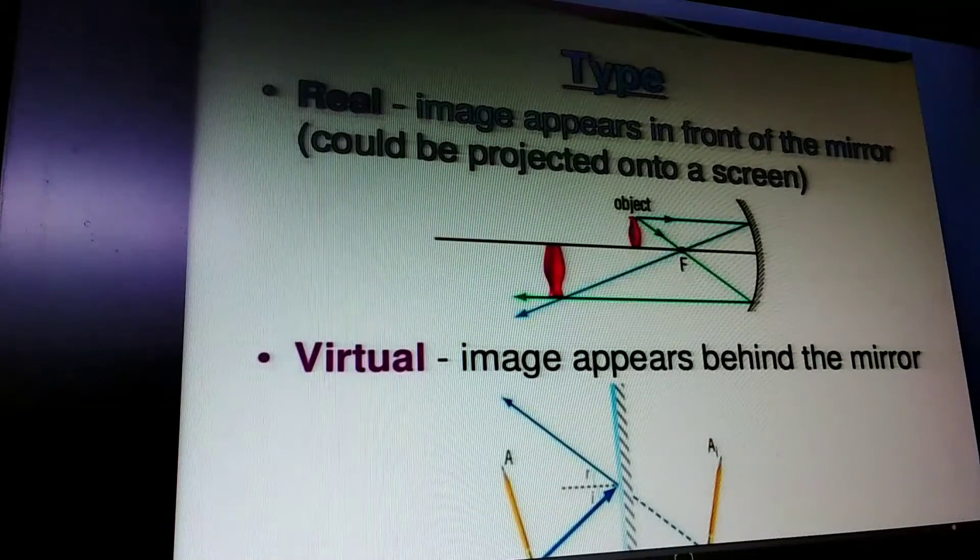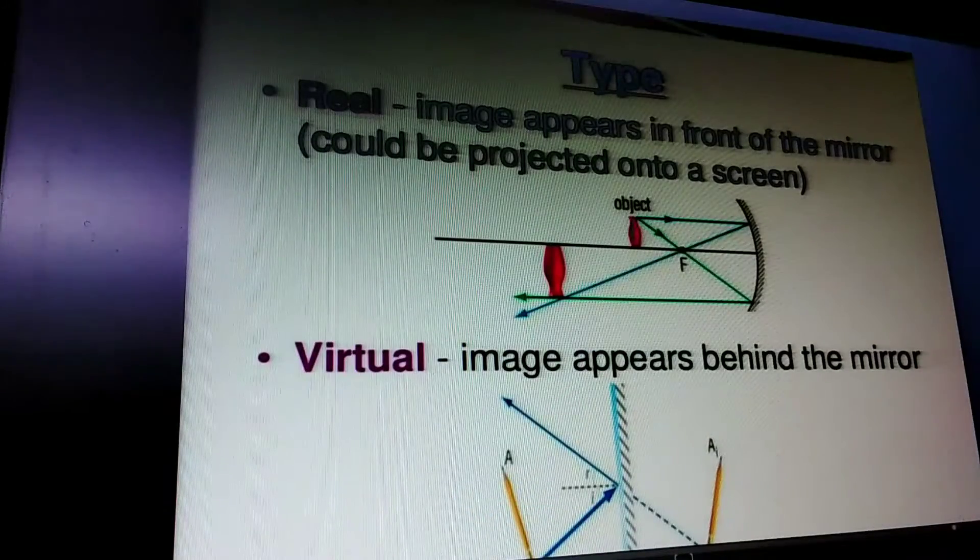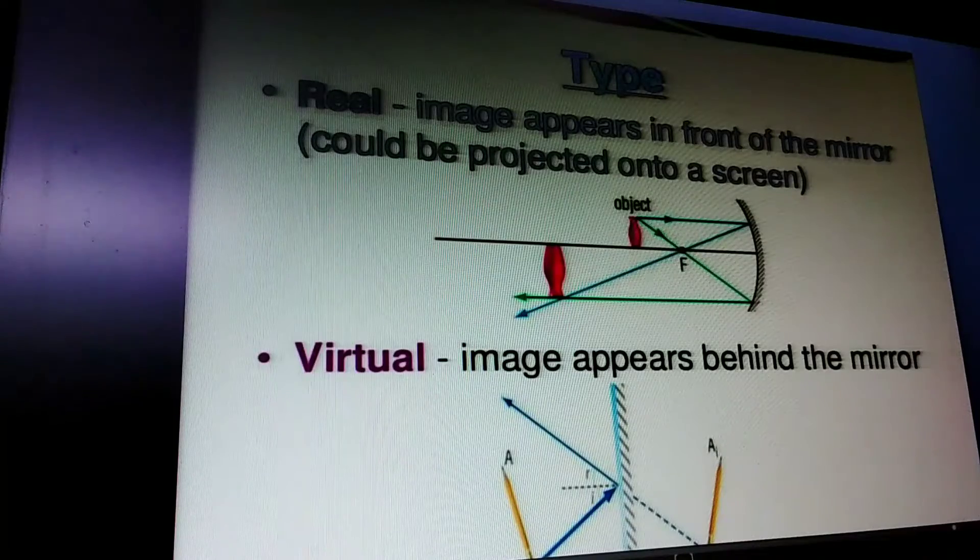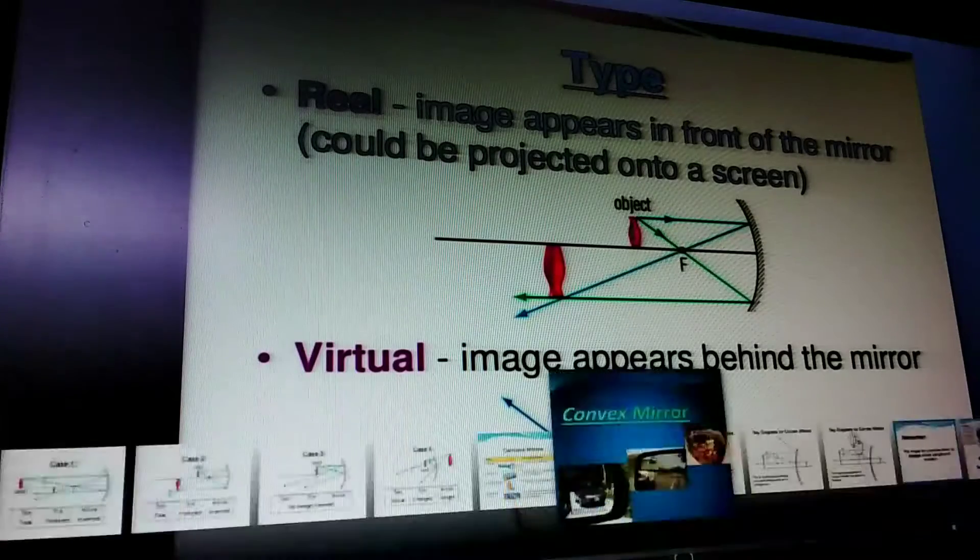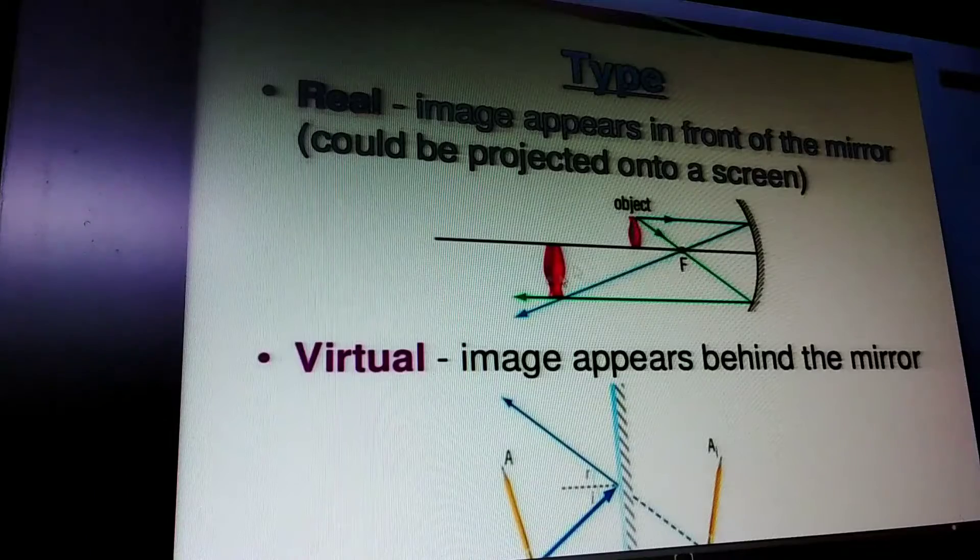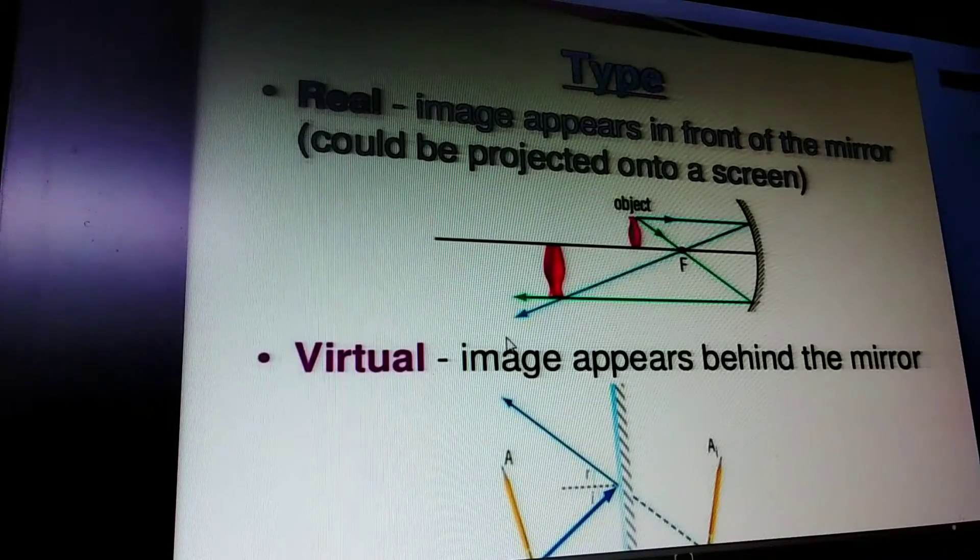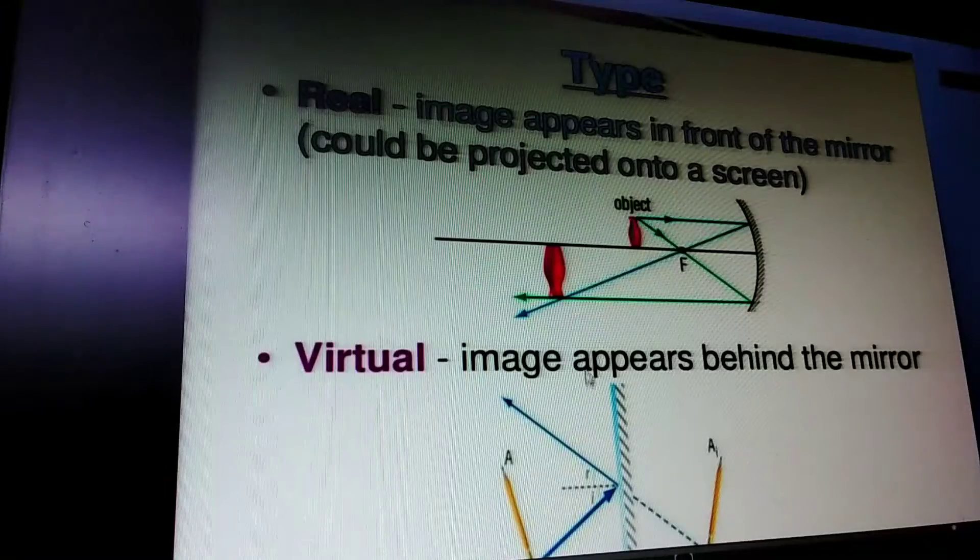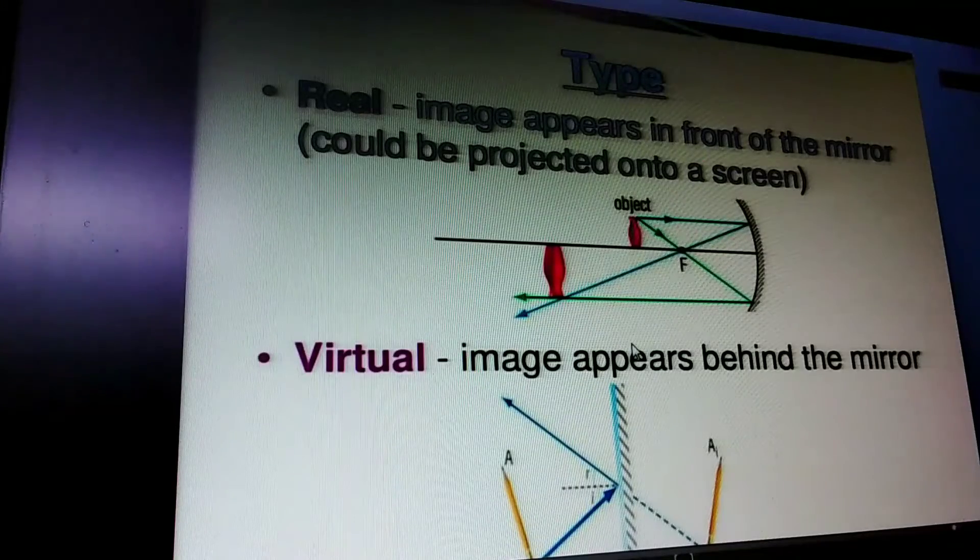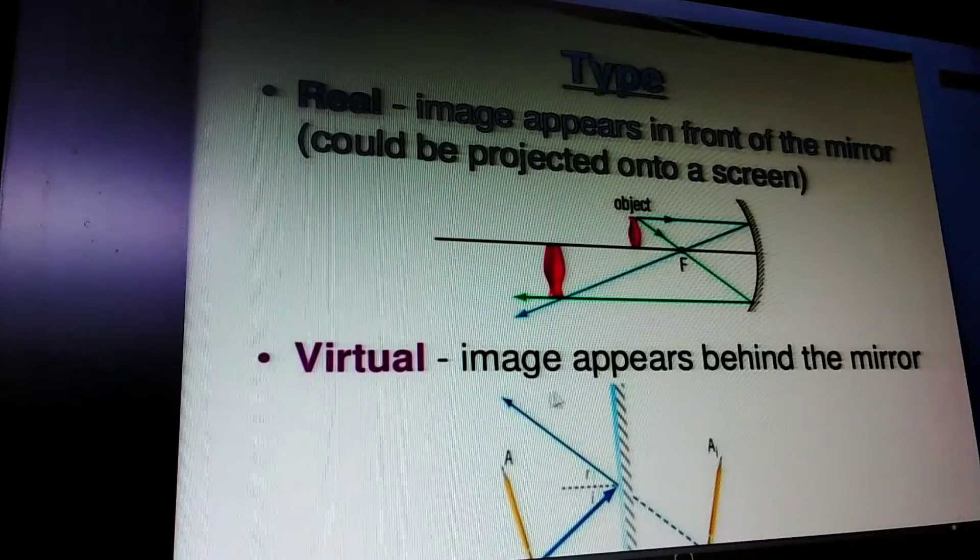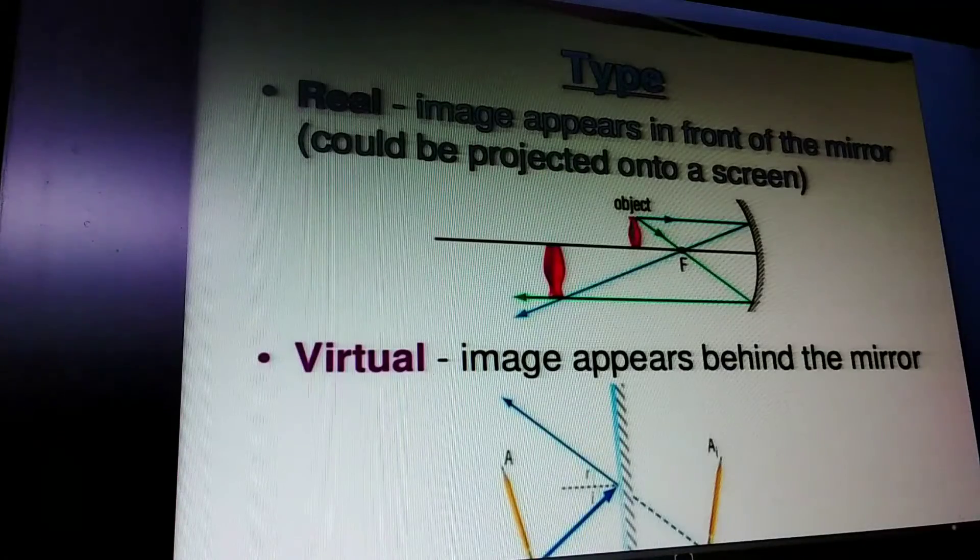There are two types of images. Real images appear in front of the mirror, meaning they can be caught on a screen and are always inverted. Virtual images form behind the mirror and cannot be caught on a screen.